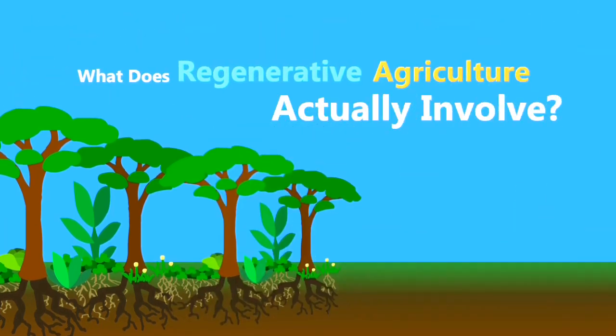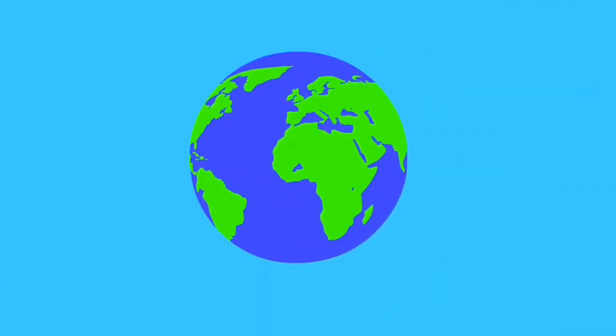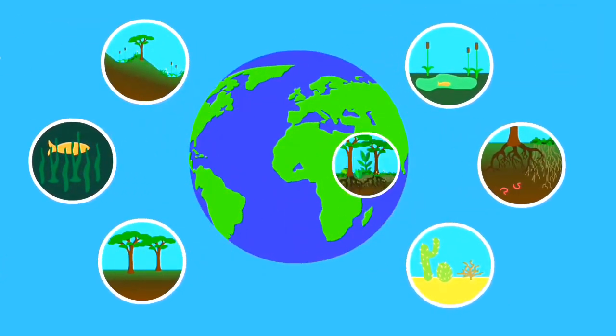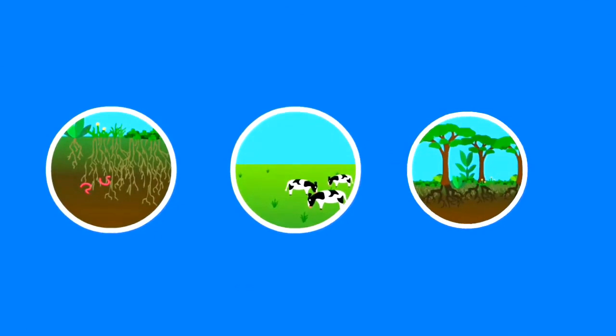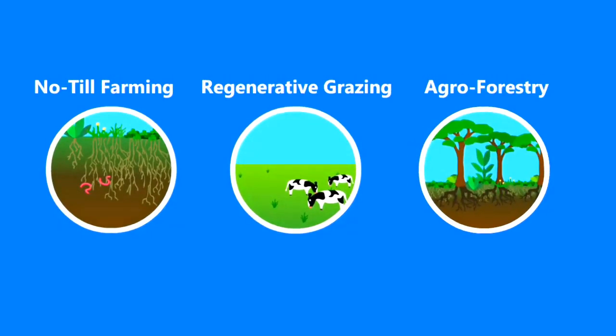So what does regenerative agriculture actually involve? Answering this question is actually pretty tricky, because the practices that work best largely depend on the land that's being worked with. So the variety of different practices border on infinity, a bit more than this video can cover. However, let's look at three common forms that regenerative agriculture can take.